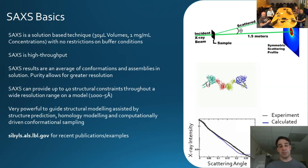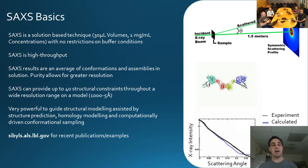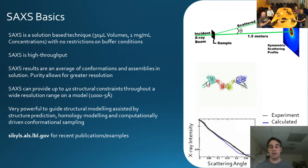Because it's a solution technique, SAXS results are an average of all the conformations and assemblies in solution. So if you can get purity, you're ultimately going to get better resolution in either conformation or assembly. SAXS provides about 40 unique pieces of information — you can think of them as constraints — spanning a wide scale of distances, from characterizing a thousand-angstrom particle down to domains that move five angstroms apart.